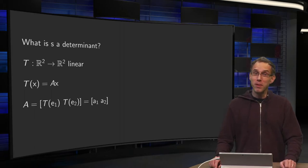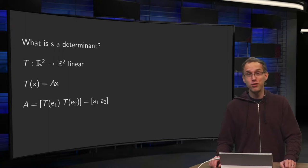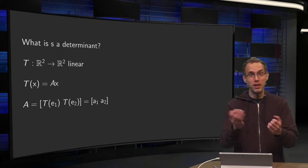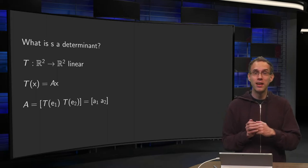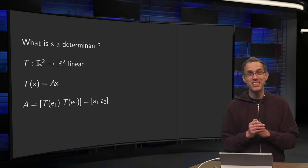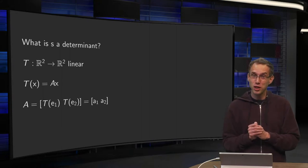You know that you can view a matrix as the implementation of some linear transformation. So a matrix and a transformation are intimately related. What about the determinant of a matrix? Does that tell us something about the linear transformation?